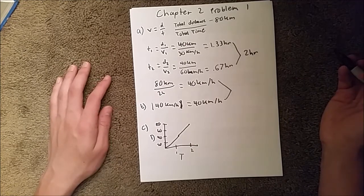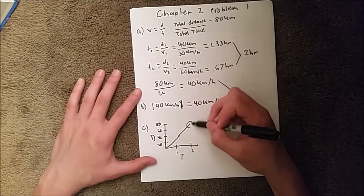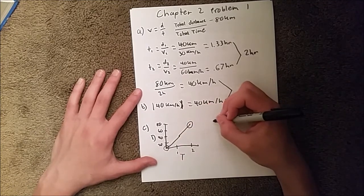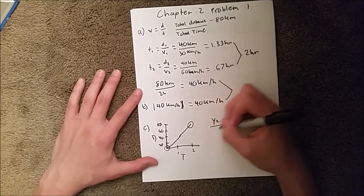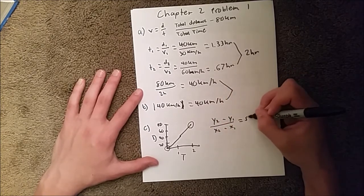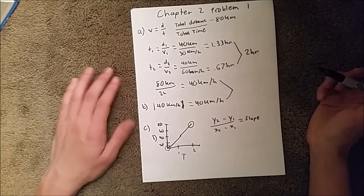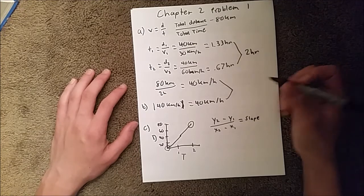And the way you would find your average velocity is you would take these two points and you would do Y2 minus Y1 over X2 minus X1, which is equal to the slope of the line formed by those two points.